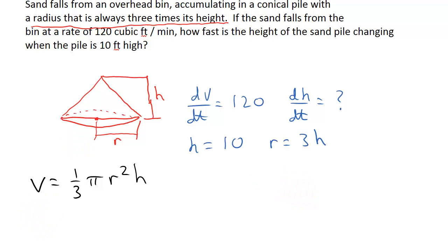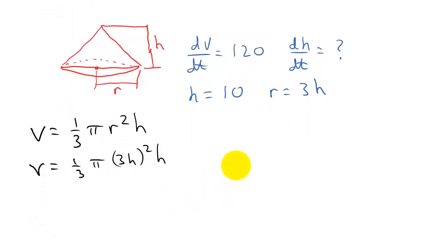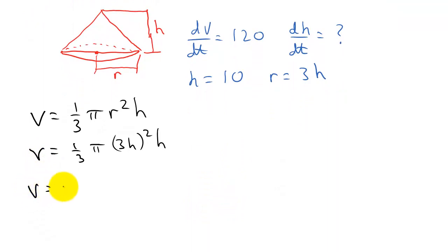So we can write our formula. The volume is one third times pi times the radius squared. Now the radius is three h. So that's three h squared times h. And so this is going to give us, if I square both of these, three squared is nine, and nine times one third is three pi h squared times h. So the volume is three pi h cubed.